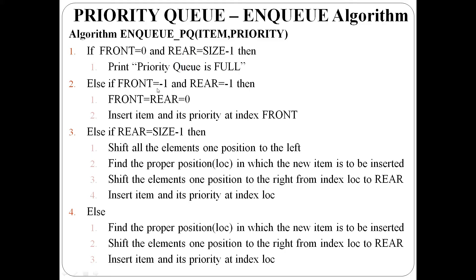Case two: if front equal to minus one and rear equal to minus one, the queue is currently empty. Set front and rear to zero, insert the item at that index with its priority. Case three: if rear is equal to size minus one, rear end has no space. Shift all elements from front to rear one position to the left.